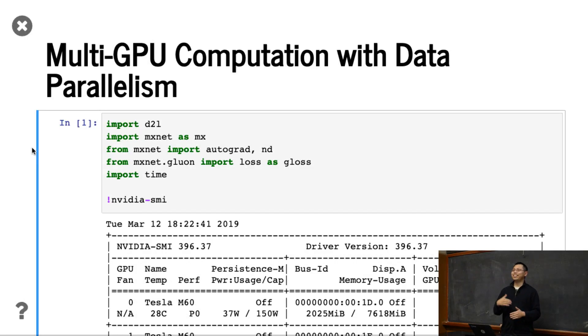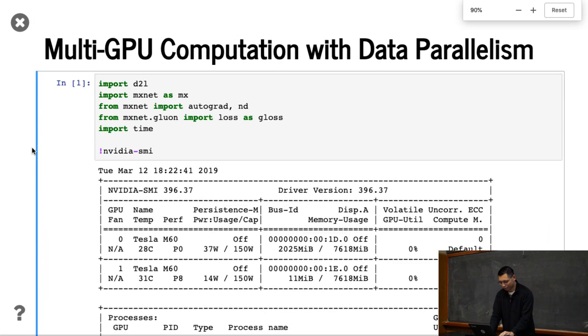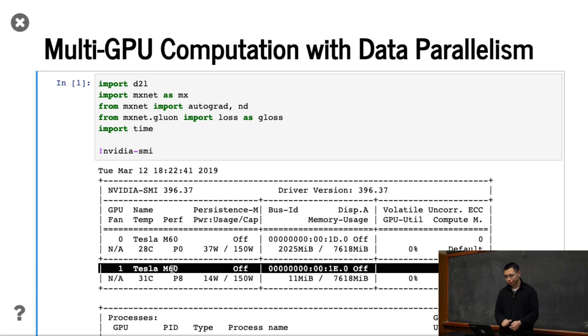For multi GPU, you need to guarantee that you have multiple GPUs. For example, I do have two GPUs here. One is pretty slow GPUs as M60. It's like three or four years ago GPUs, but it's pretty cheap. And I have two GPUs here.